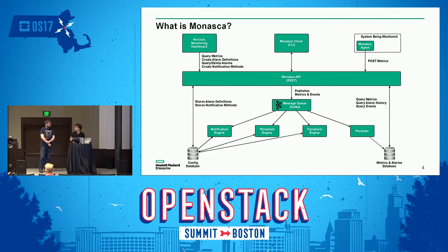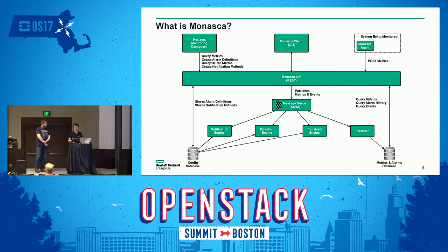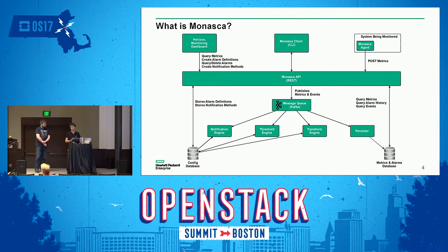The architecture of Monasca is more or less this. At the center is the message queue, which is Kafka. The biggest thing is the Monasca API, which is the connection to the outside world where pieces connect to Monasca to get data or to configure things. Then there is the Monasca persister, which writes all the measurements — all the points, everything that needs to be recorded — on a time series database.